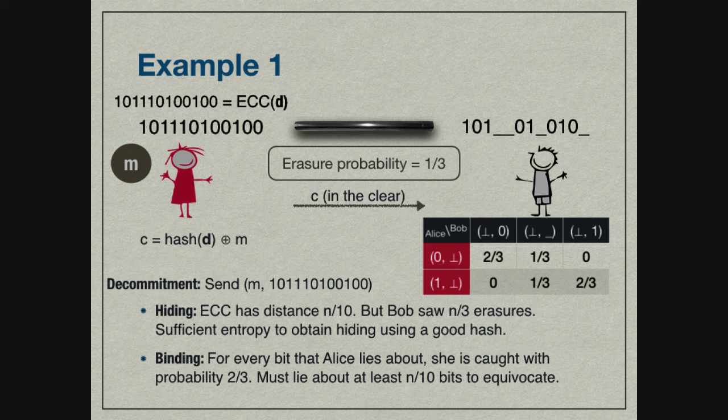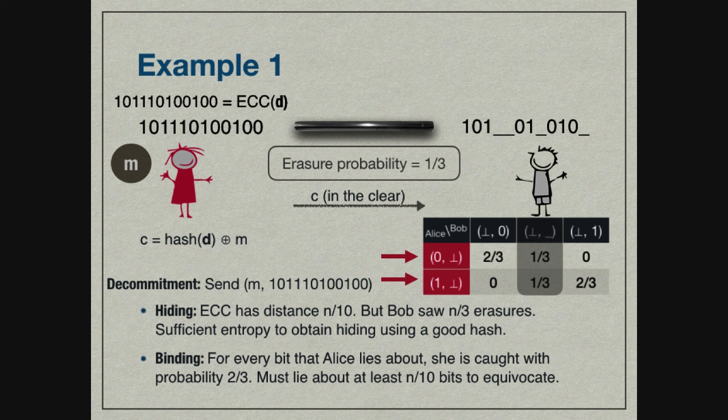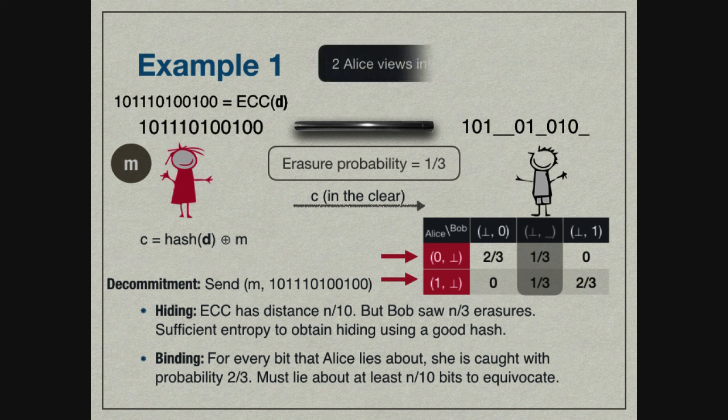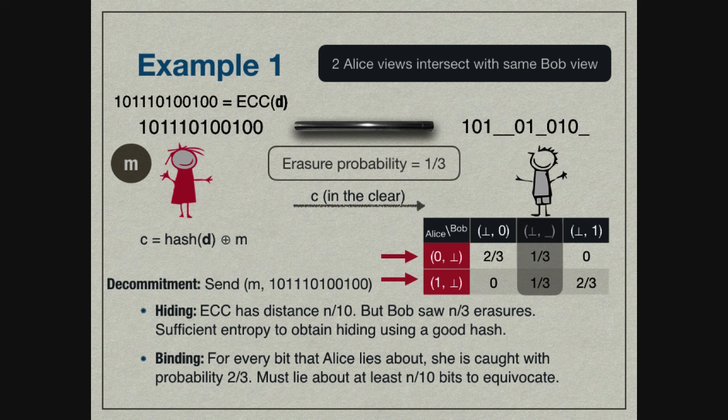The property we abstract out is that there are two views of Alice corresponding to input zero and input one, which intersect with the same view of Bob. So whenever Bob has this input, which is an erasure, he has no clue whether Alice had this input or this input. This is what gives hiding in this scheme. It seems like if we look for this property in any functionality, that there are two Alice's views that intersect with the same Bob views, we should be able to get commitments from general functionalities.